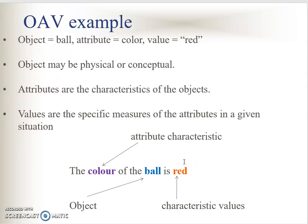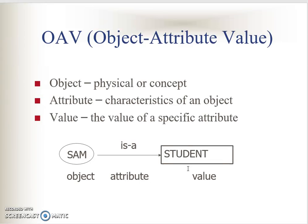How do we represent this? The object is usually a circle or oval. The attribute is written on top of the arrow or arc, and the value is in a rectangle. For example, 'sem' is an object. The attribute is 'is a' — the relationship, similar to semantic networks — and the value is 'student'.